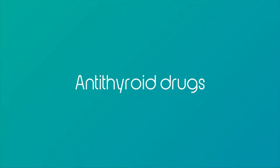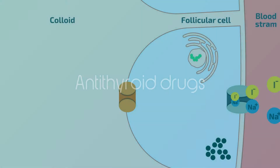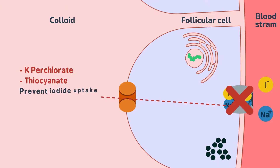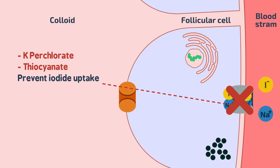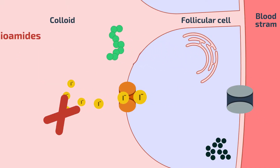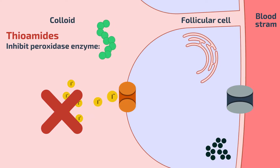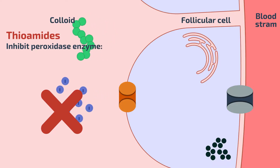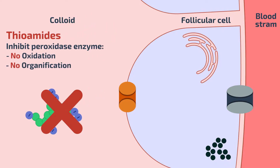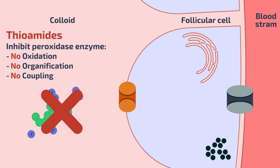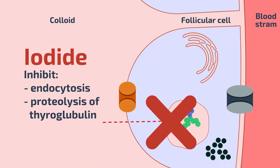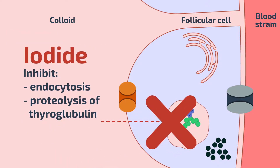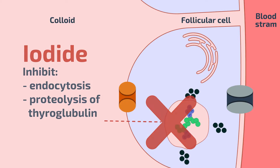Now let's talk about antithyroid drugs. Potassium perchlorate and thiocyanate both prevent iodide uptake. Thioamides inhibit the peroxidase enzyme, which means no oxidation, no organification, and no coupling. Iodide inhibits the endocytosis and proteolysis of thyroglobulin.